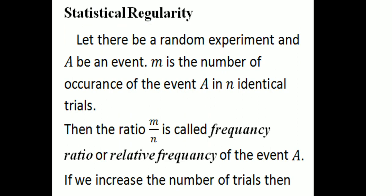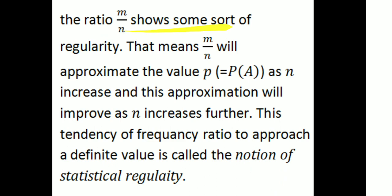Statistical regularity: let there be a random experiment and let A be an event. Let m denote the number of occurrences of event A in N identical trials. Then the ratio m/N is called the frequency ratio or relative frequency of the event A. If we increase the number of trials, the ratio m/N shows some sort of regularity — m/N will approximate the value P, that is the probability of A, as N increases, and this approximation improves as N increases further. This tendency of the frequency ratio to approach a definite value is called statistical regularity.